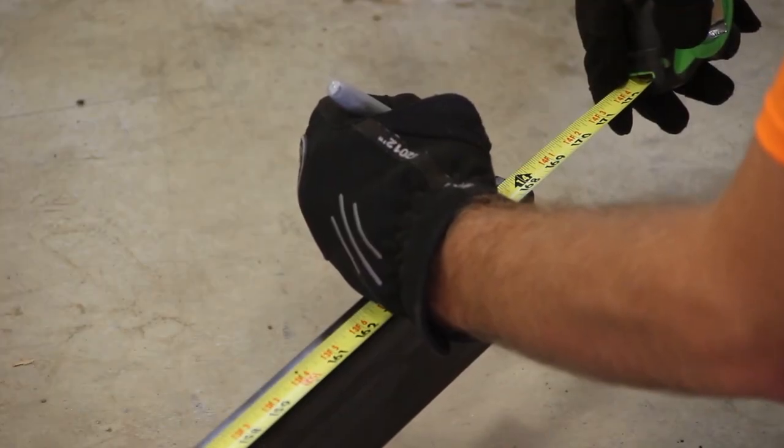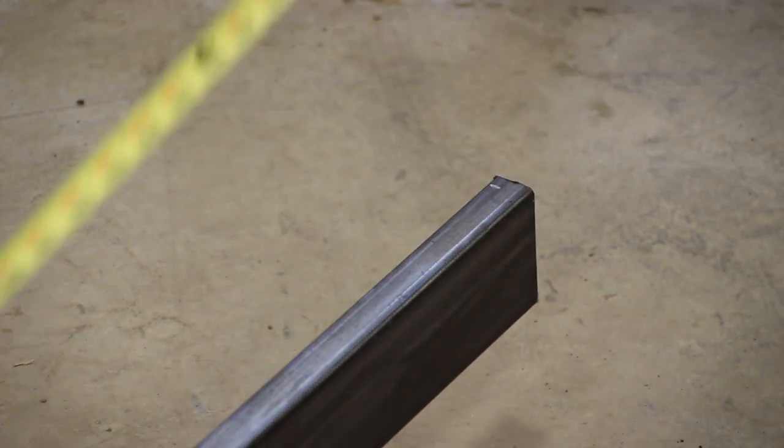With one cut completed I can measure for the outside length, flip it and make the second mitered cut.